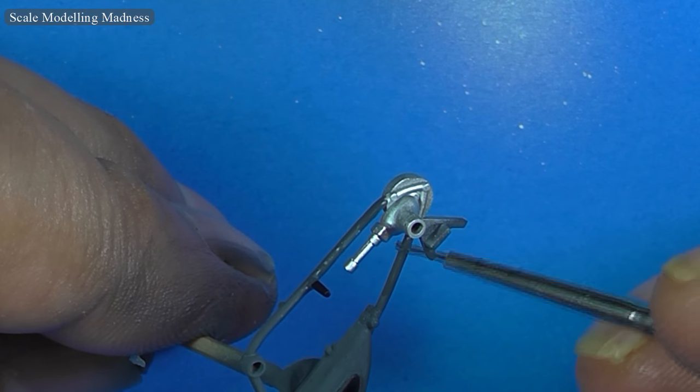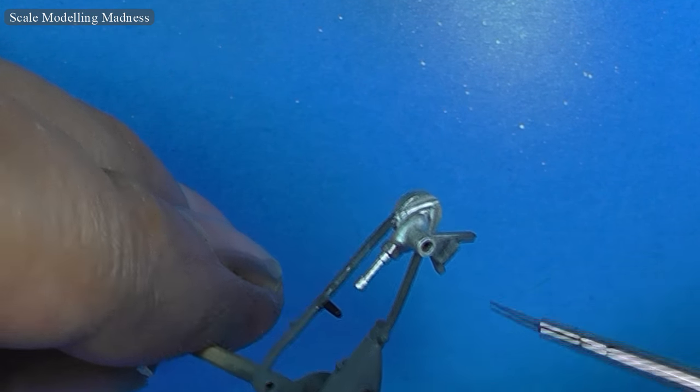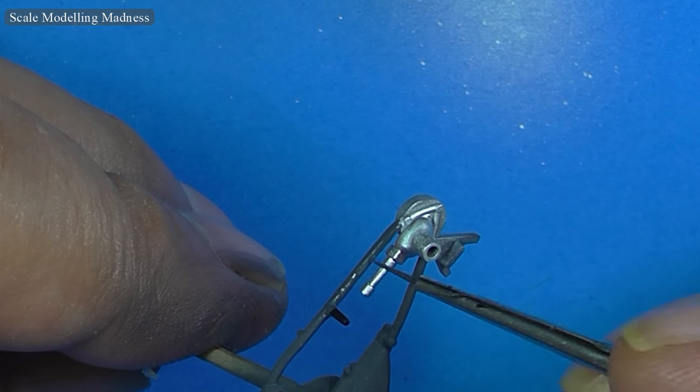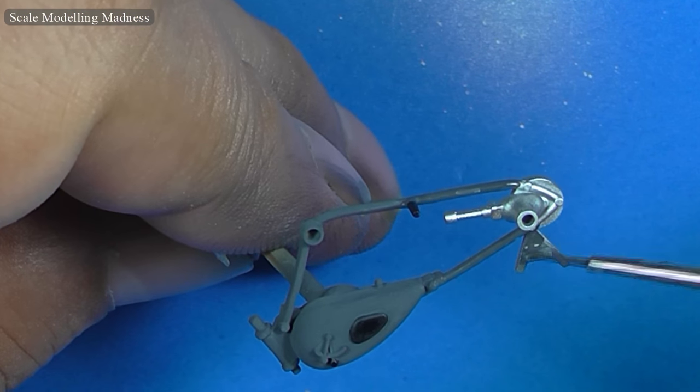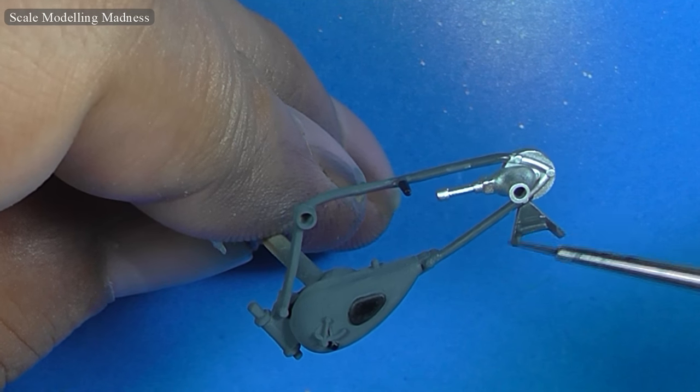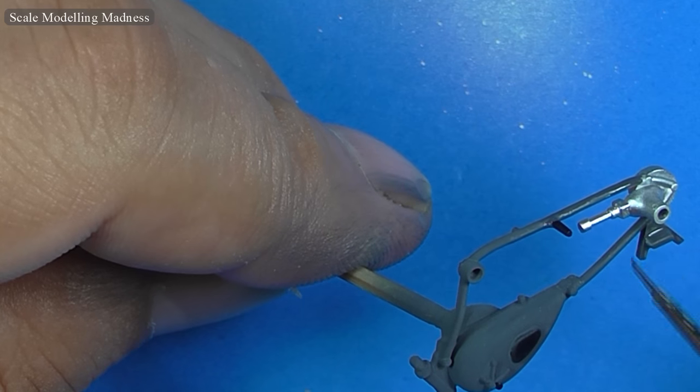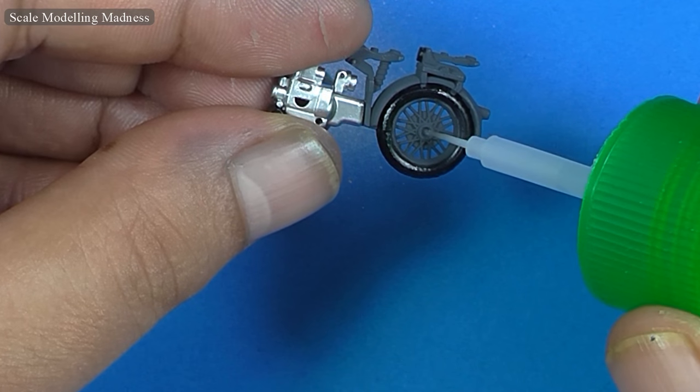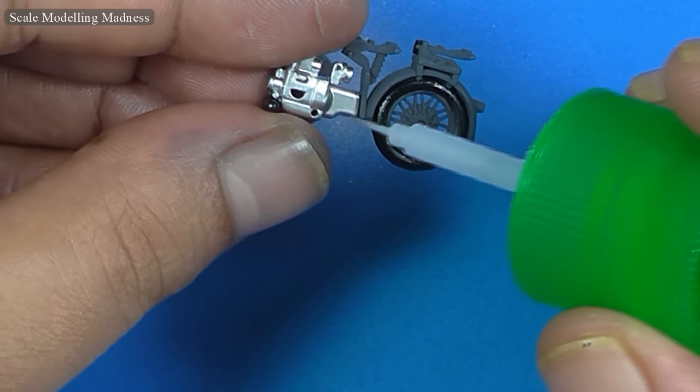I also clean up the overspray from the aluminum paint with German grey. Finally, all the parts of the main body are glued together.